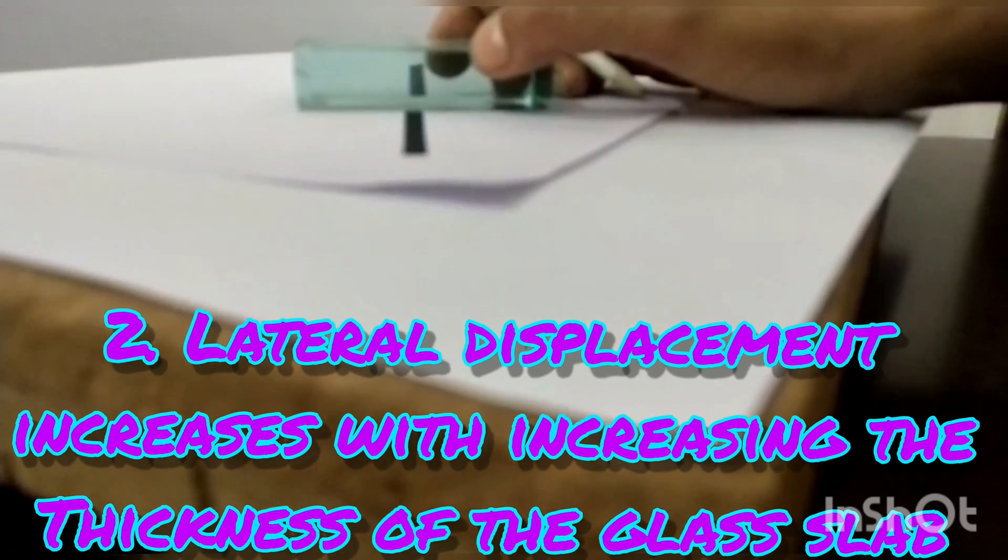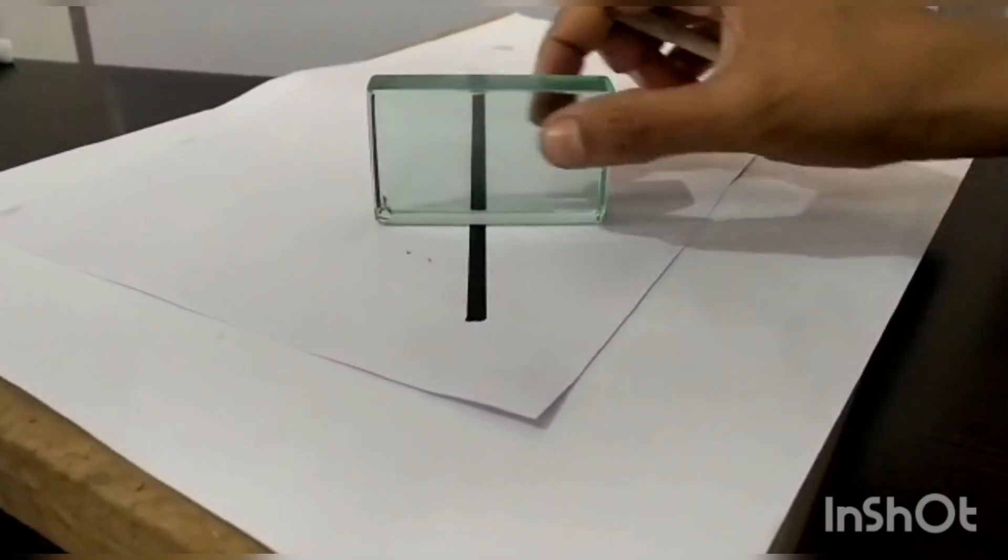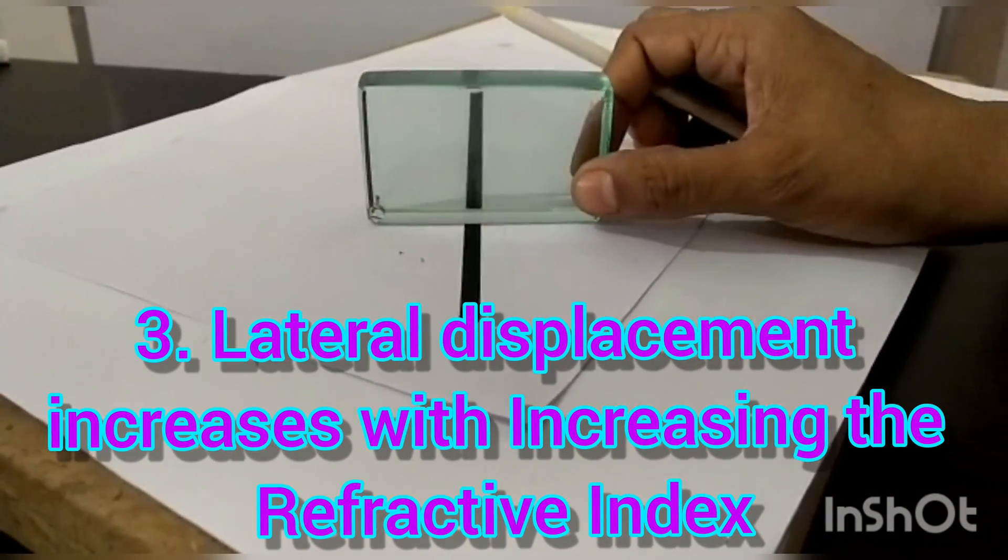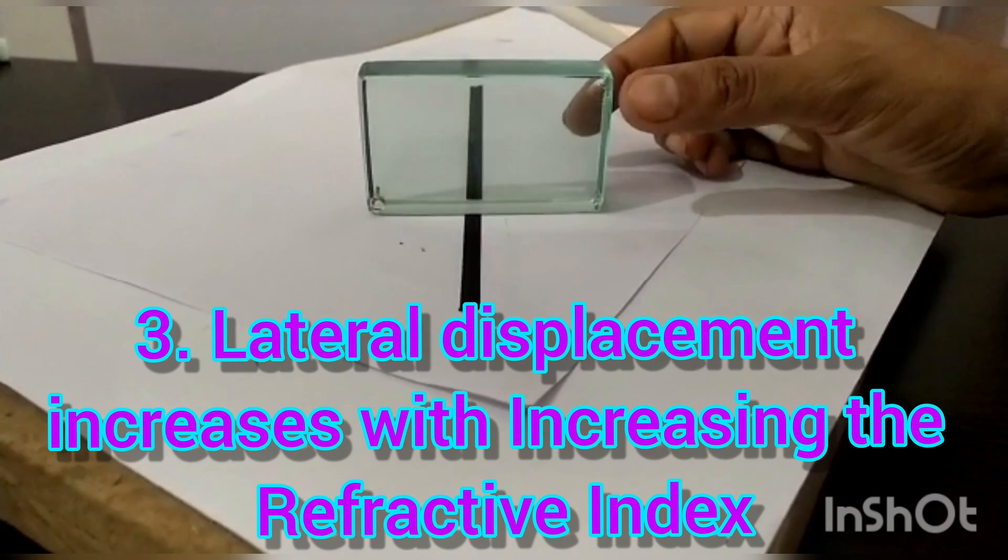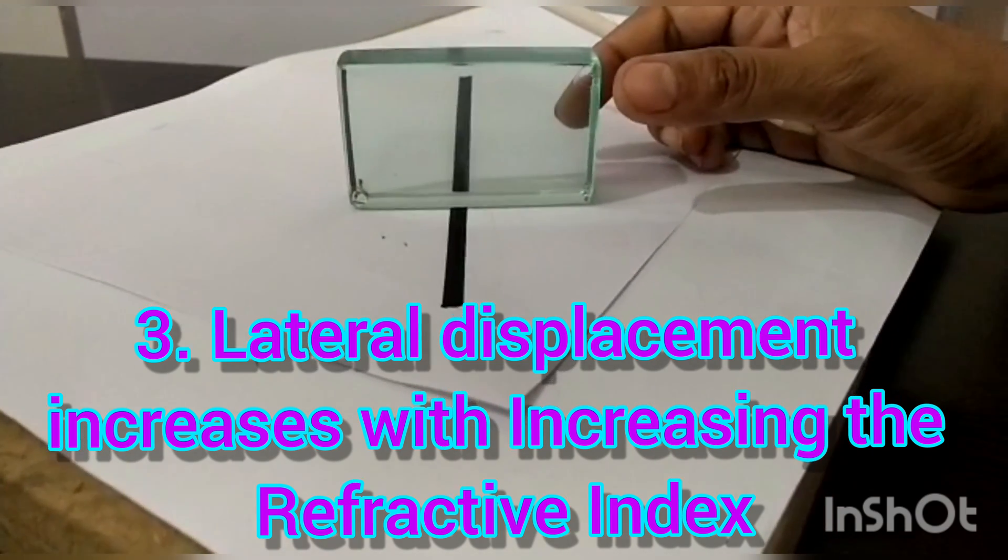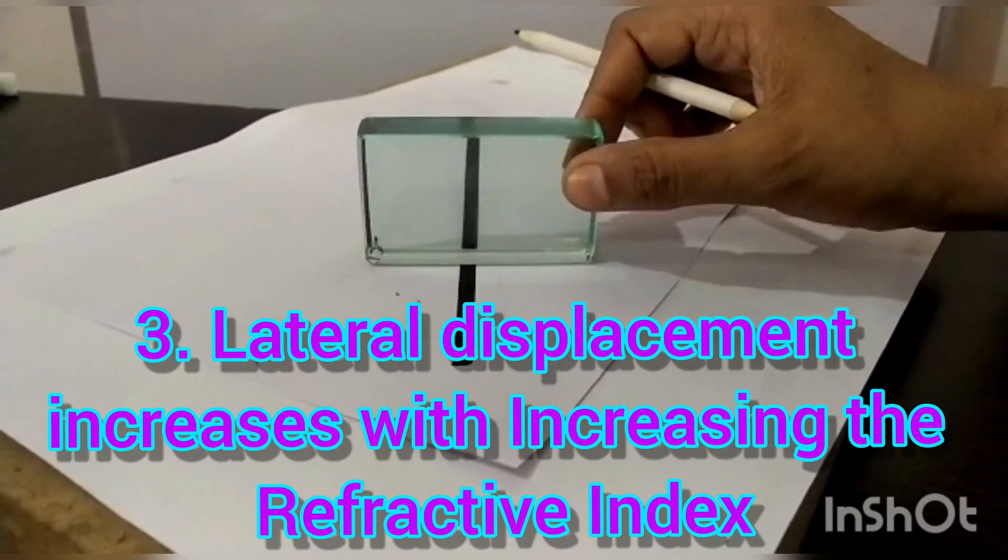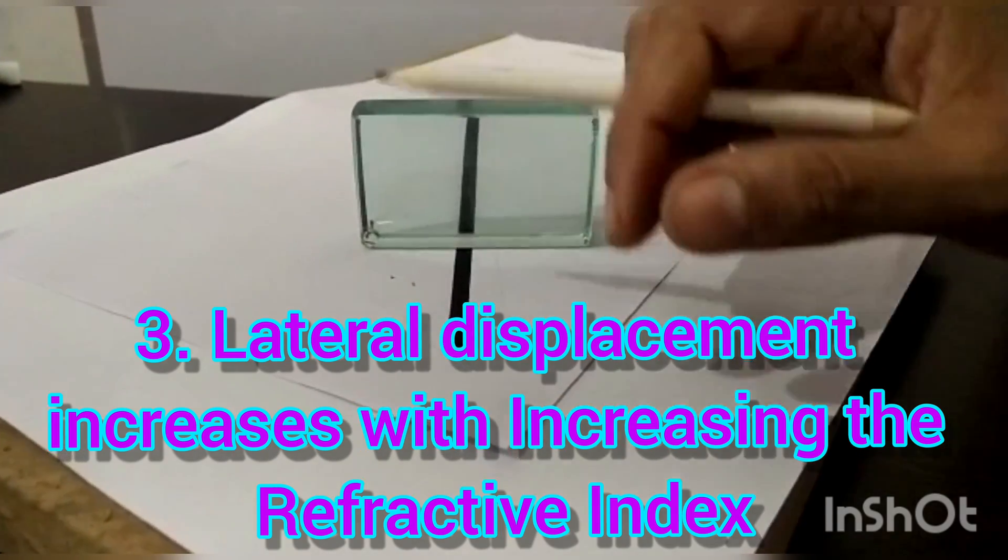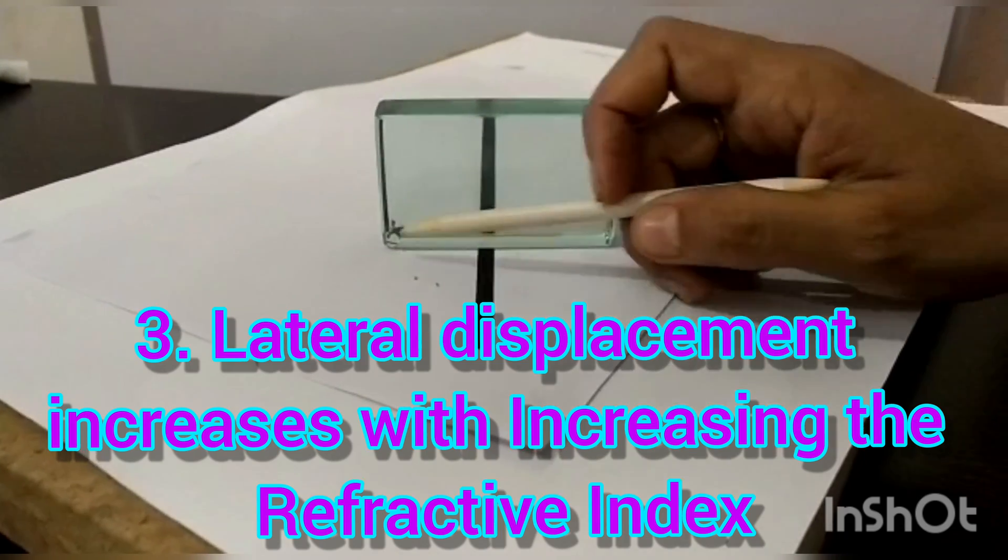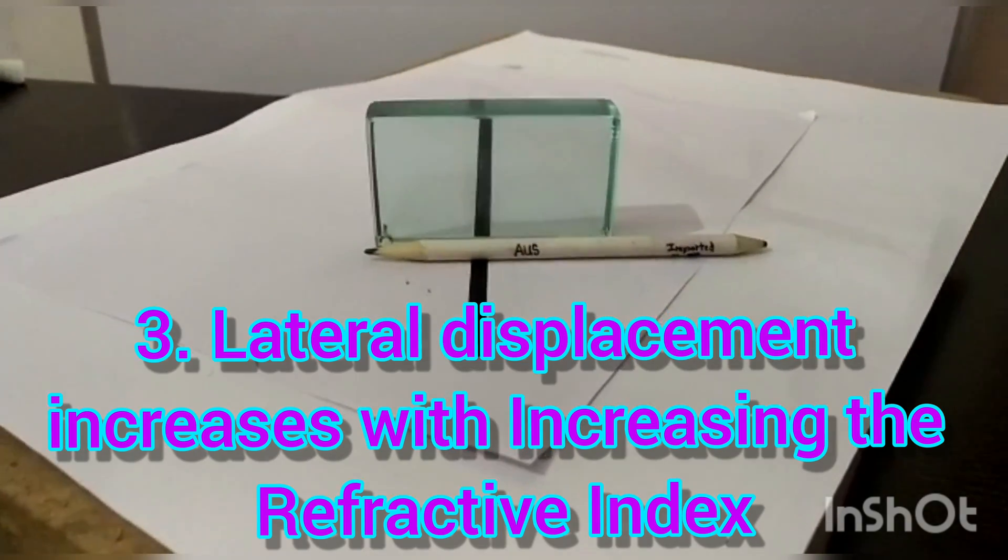And the third factor on which it depends is the material. If rather than glass I take diamond or some other material, the lateral shift will increase. So there are three factors: one is thickness of the glass slab, second is angle of incidence, and third is refractive index, which will change the lateral shift.